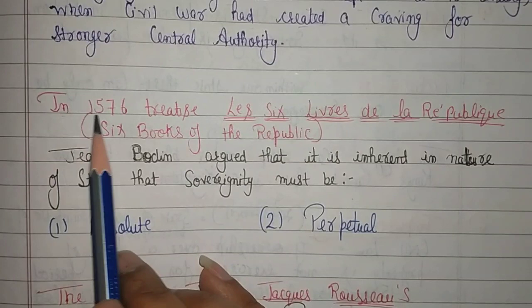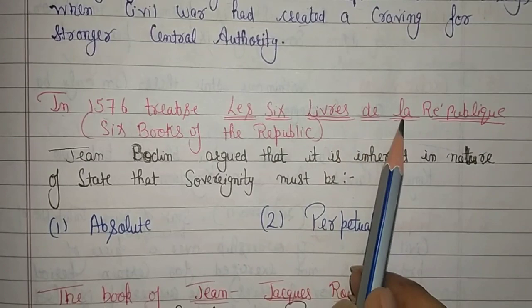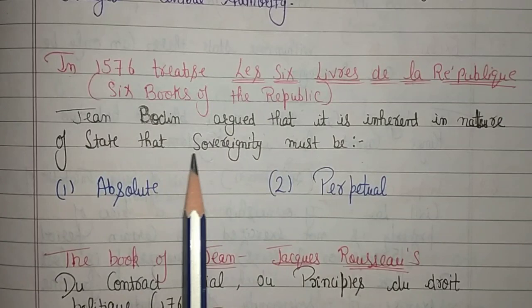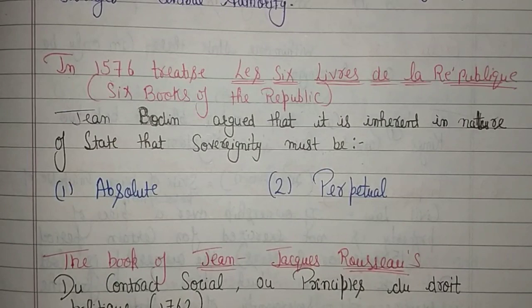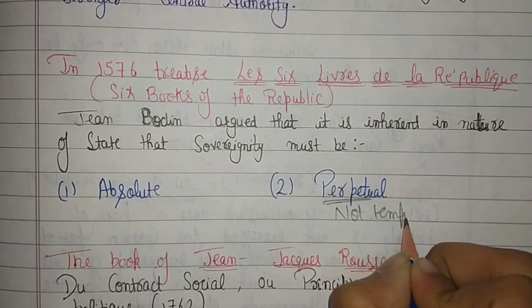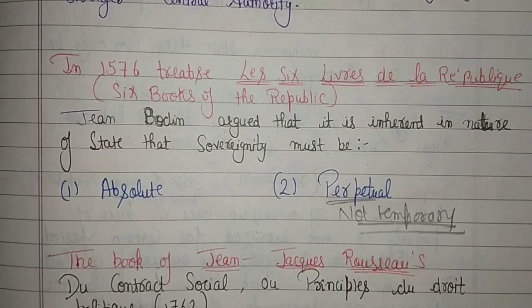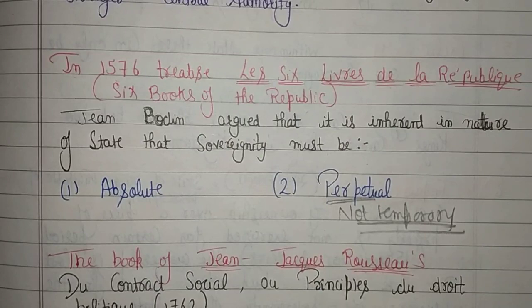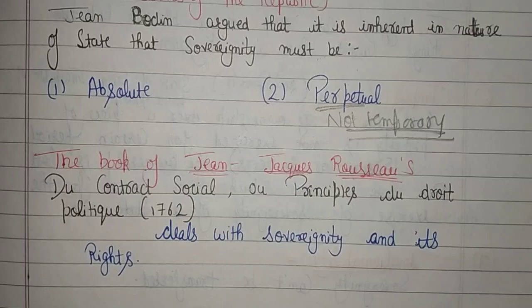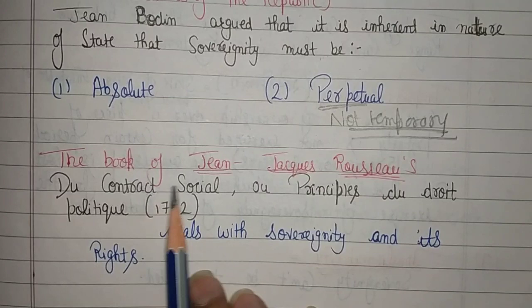In 1576, a treatise — 'Les Six Livres de la République' meaning Six Books of the Republic — Jean Bodin ने argue किया कि it is inherent in the nature of the state that sovereignty must be absolute — कोई रोक-टोक नहीं, complete power transfer — plus perpetual — मतलब temporary नहीं होगी, for a long long period of time वो power दी गई है। तो Jean Bodin के according sovereignty absolute होगी और perpetual होगी।